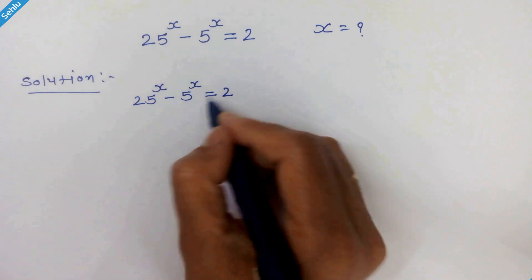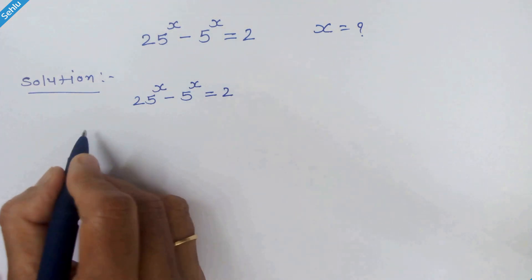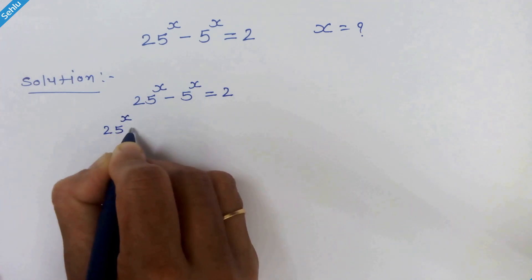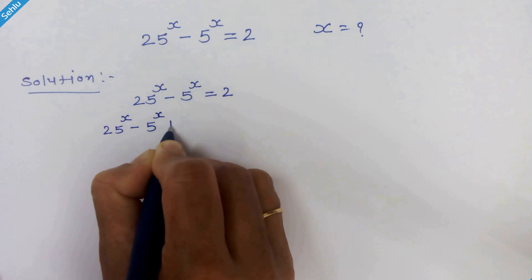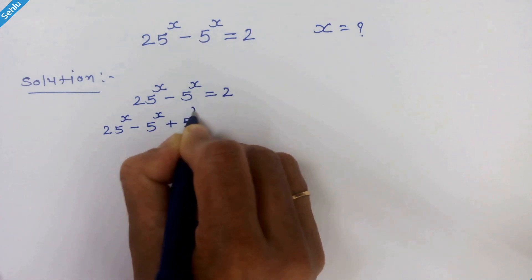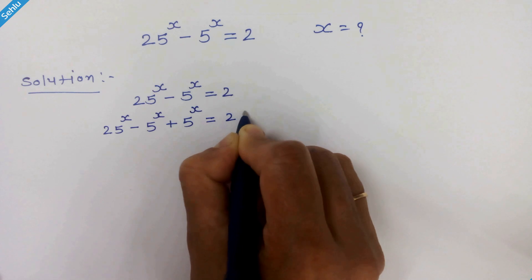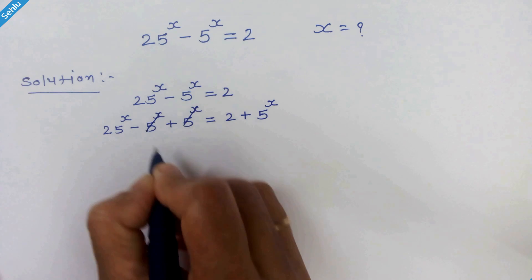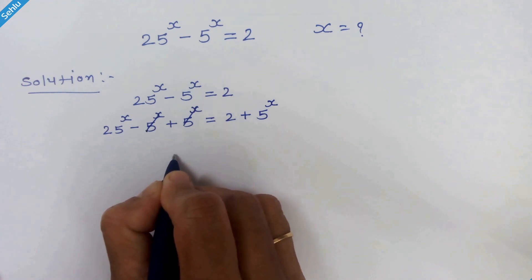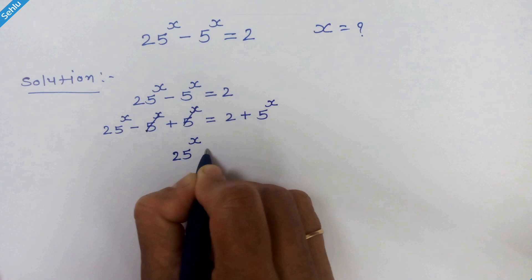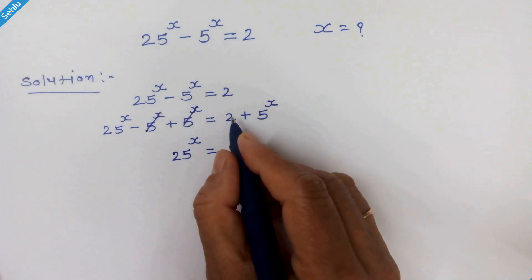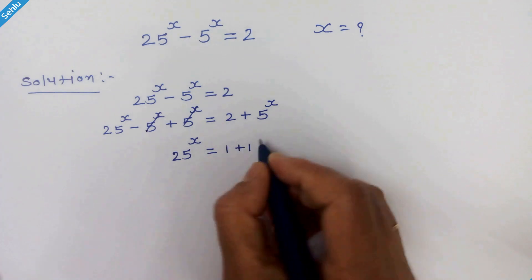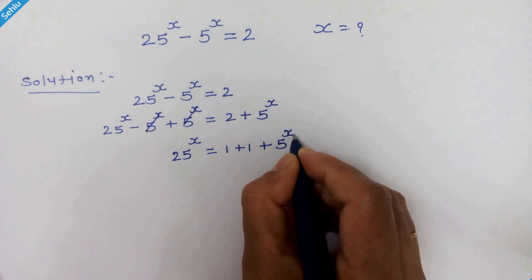First we will add 5 raised to x to both sides. So we have 25 raised to x minus 5 raised to x plus 5 raised to x is equal to 2 plus 5 raised to x. The minus and plus 5 raised to x terms cancel out, giving us 25 raised to x is equal to 1 plus 1 plus 5 raised to x.